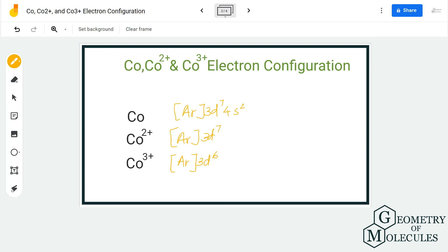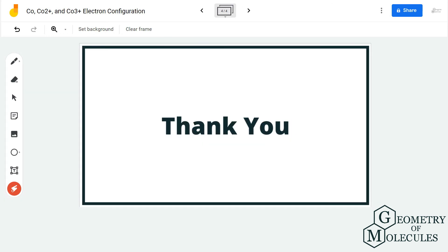These are the electron configurations for Co, Co²⁺, and Co³⁺. I hope this video helps you understand how to write electron configurations. You can watch our other videos on chemistry basics, balancing equations, and Lewis structures in the description box. Subscribe to our channel and hit the bell icon. Thank you for watching.